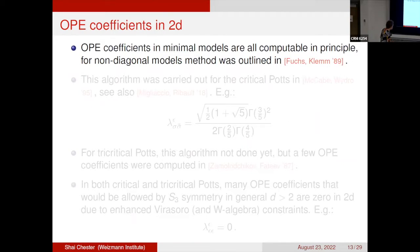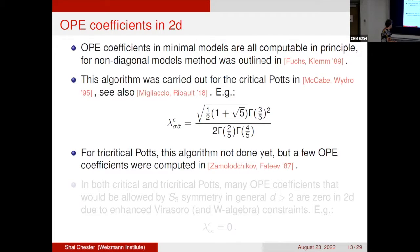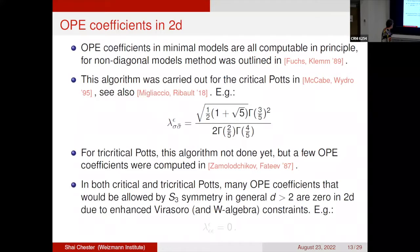Because these are minimal models, one can compute everything — all scaling dimensions and OPE coefficients. An algorithm for computing OPE coefficients for non-diagonal minimal models was shown in the 80s, and was carried out for the critical Potts theory, yielding ratios of Gamma functions with complicated fractions. For the tricritical case, a few OPE coefficients were computed by Dotsenko and Fateev. A curious fact in 2D is that many OPE coefficients that would be allowed by S3 symmetry in general d are actually zero in 2D, explained by the enhanced Virasoro or W-algebra constraints.